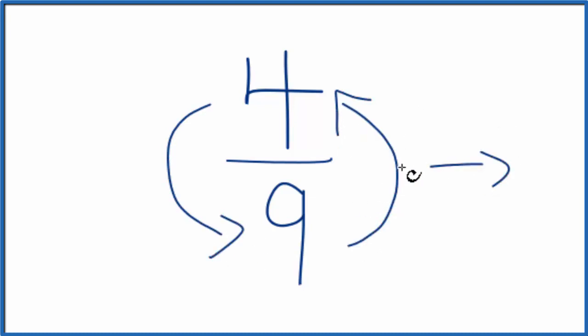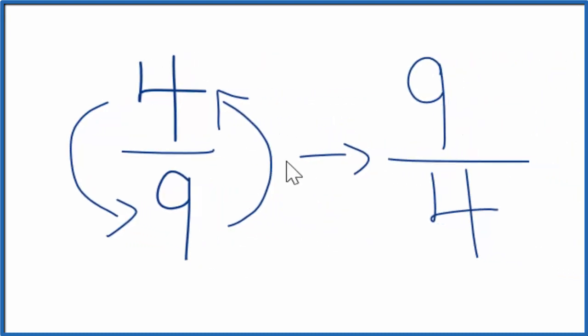When we do that, we get 9 as our numerator, and then 4 as our denominator. The reciprocal for 4 ninths is 9 fourths.